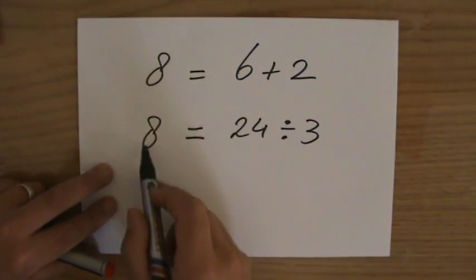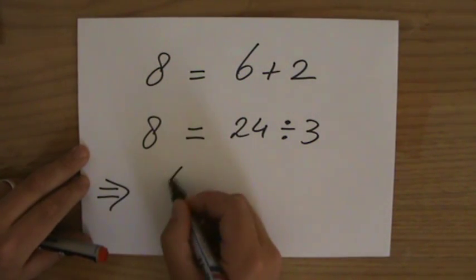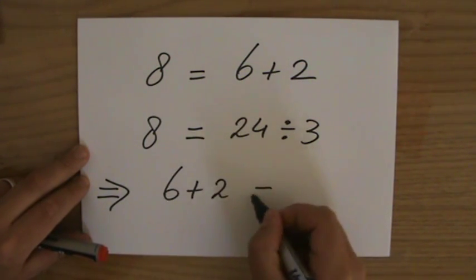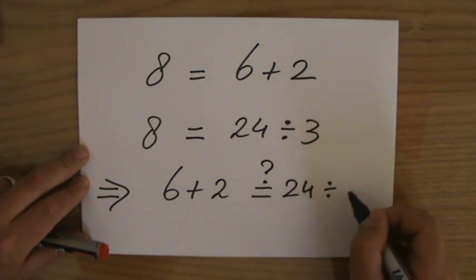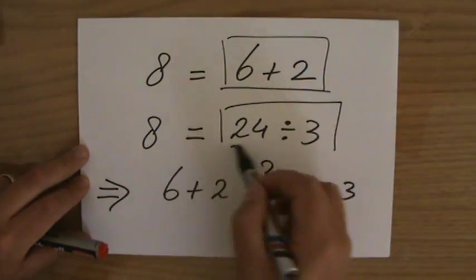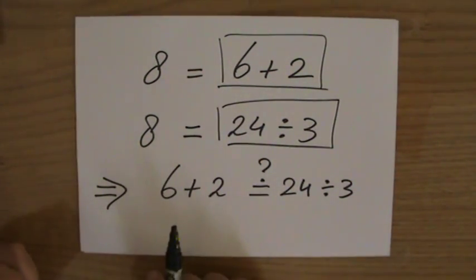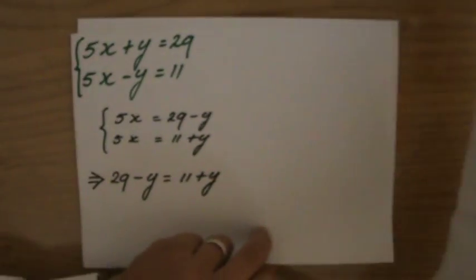Now these 8's are the same. Does that mean that 6 plus 2 is the same as 24 divided by 3? So is this side the same as that side? 6 plus 2 is 8. 24 divided by 3 is 8. Yes it is. So the same thing is happening here.